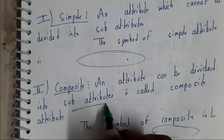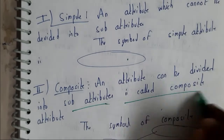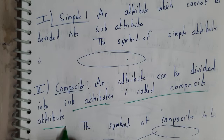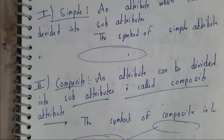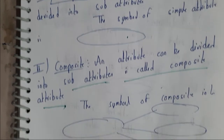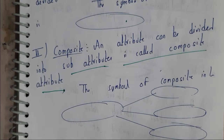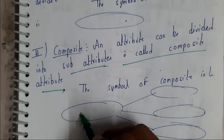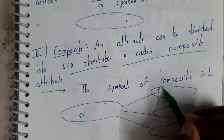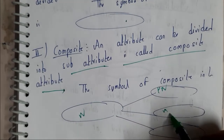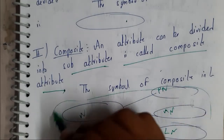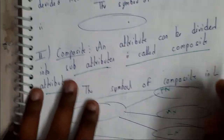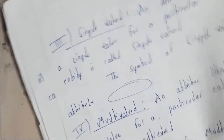A composite attribute can be divided into sub-attributes. The best example is your name — you have your first name, your middle name, and your last name. So 'name' is a composite attribute.